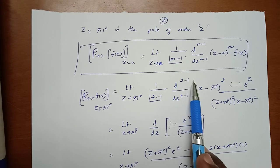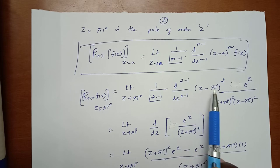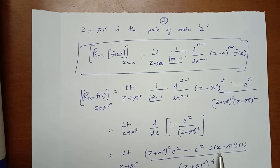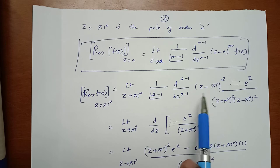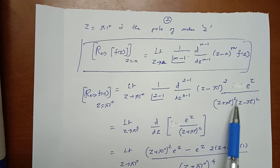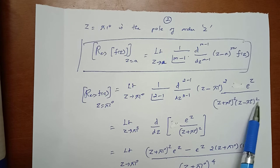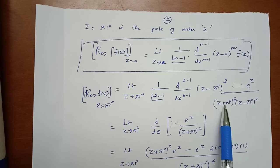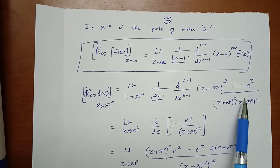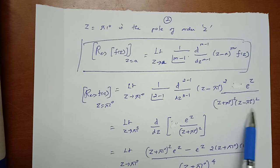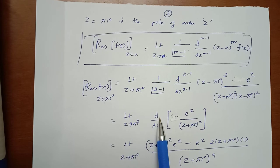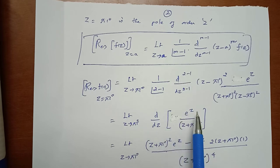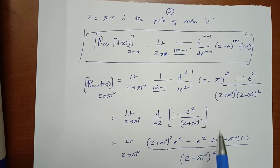For the residue at z = πi with m = 2: Res = lim(z→πi) d/dz [(z − πi)² · e^z / (z² + π²)²]. We factor (z² + π²)² = (z + πi)²(z − πi)², so the (z − πi)² terms cancel, leaving: lim(z→πi) d/dz [e^z / (z + πi)²].